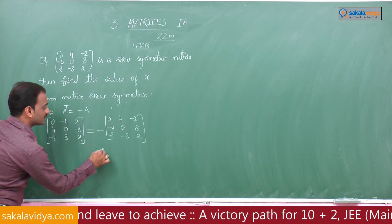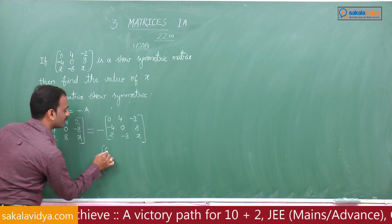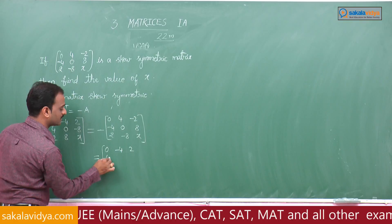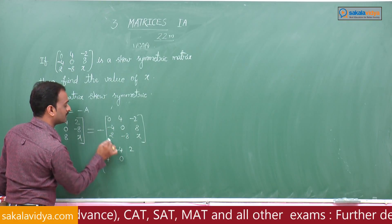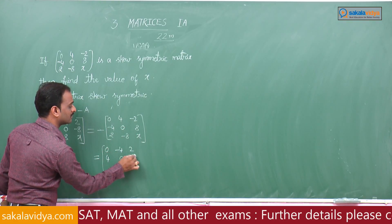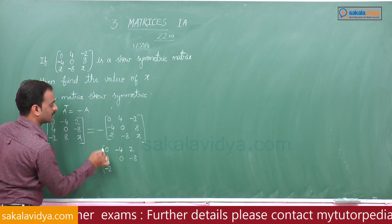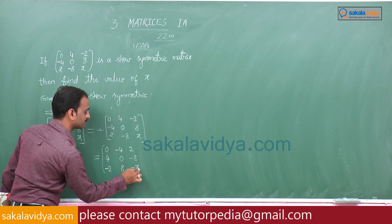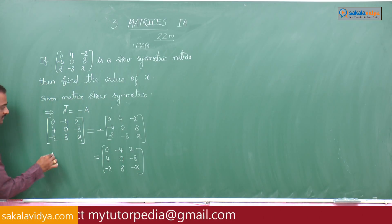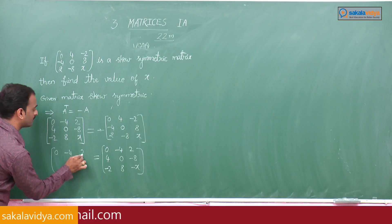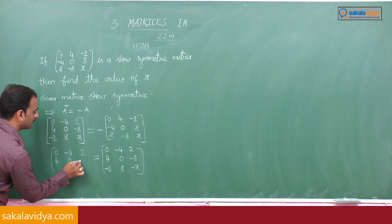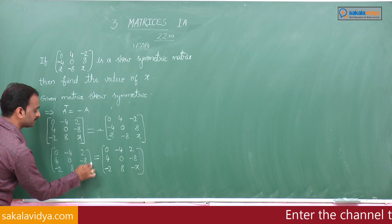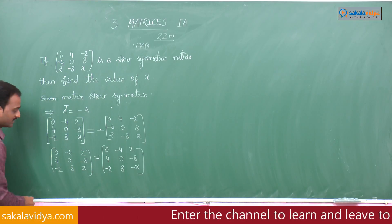This equals minus of the matrix, giving us 0, minus 4, 2, 4, 0, minus 8, minus 2, 8x. Equating the corresponding elements.